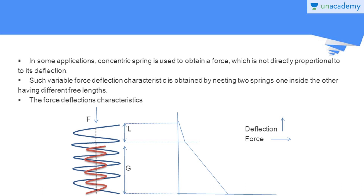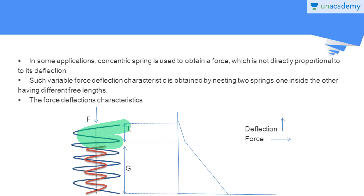In the deflection-force diagram, from deflection 0 to length L, only the outer spring acts. So the force-deflection curve for this region corresponds to the outer spring alone. From length L up to length G, both springs act together, so the force-deflection properties for this region are different — it is the sum of the contributions from both springs.